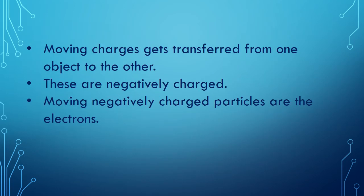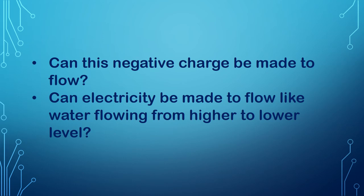Moving charges get transferred from one object to the other. These are negatively charged. Moving negatively charged particles are the electrons. Can this negative charge be made to flow? Can electricity be made to flow like water flowing from higher level to lower level? You have learnt that a force will have to be applied to put a stationary object into motion. We get current electricity when electrons in an electrical conductor are made to flow.